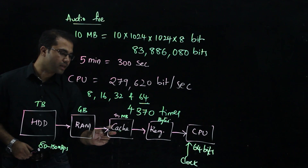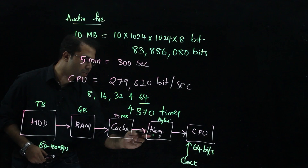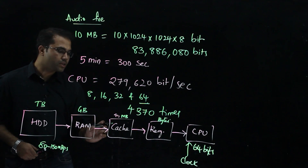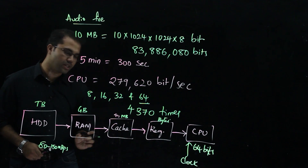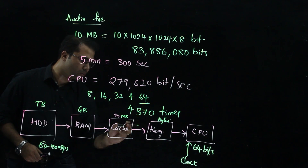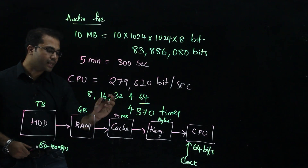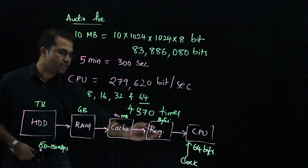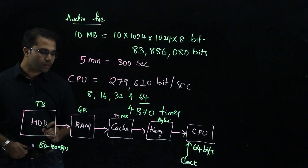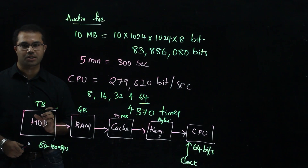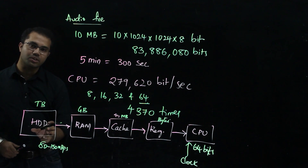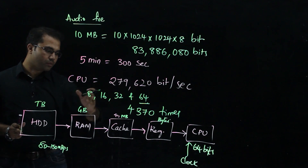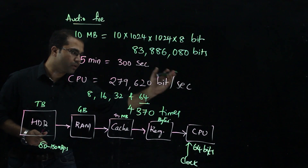The registers can deliver the exact amount of data to the CPU and are very closely associated with it. The register collects data from the cache, and the cache memory is in the CPU section. The cache, register, and CPU all run at the same clock frequencies. The register gets the required data from the cache, and the cache gets information from the RAM. The RAM gets information from the hard disk. So: hard disk → RAM → cache → register → CPU.